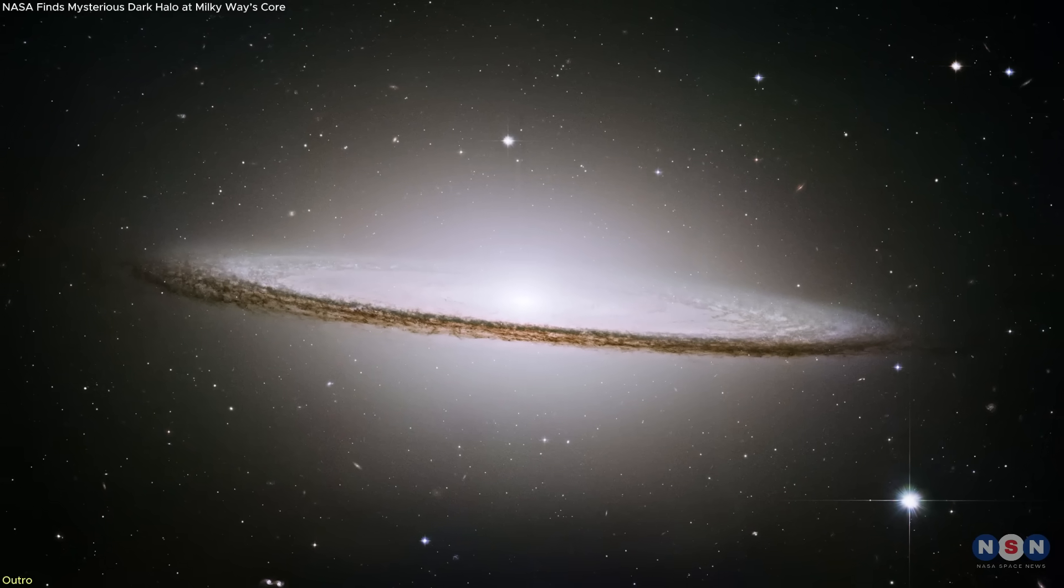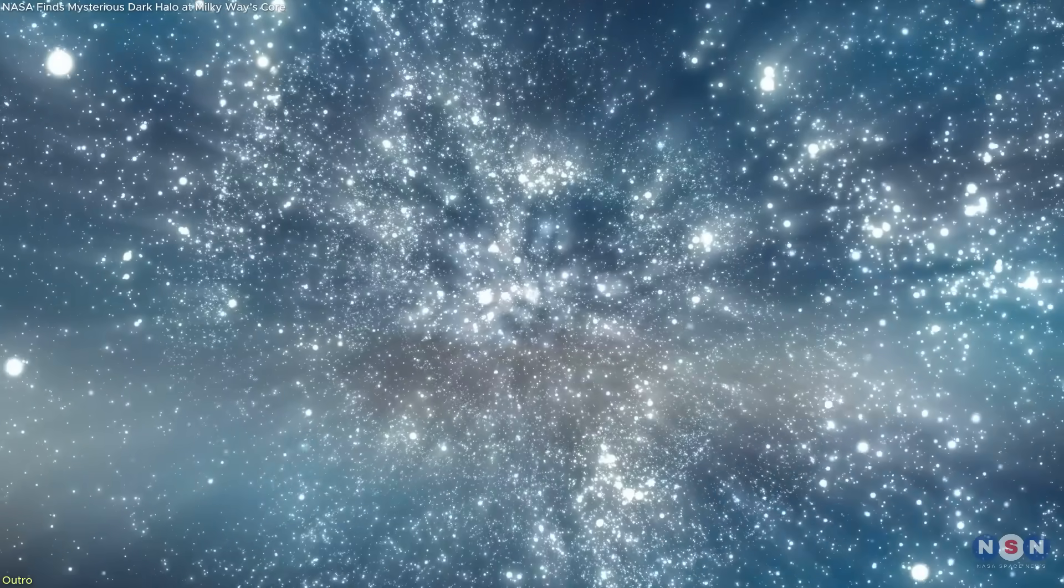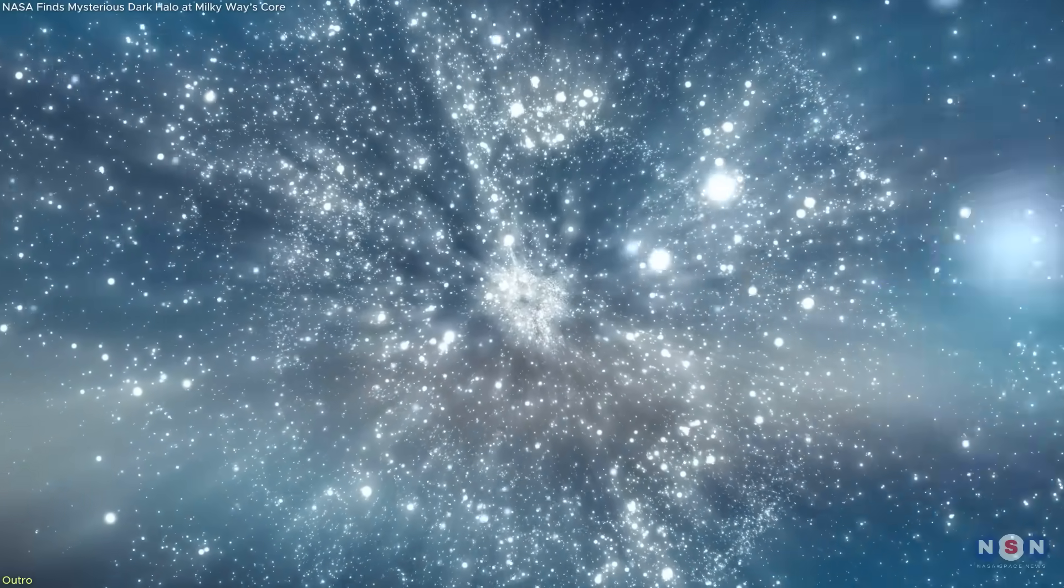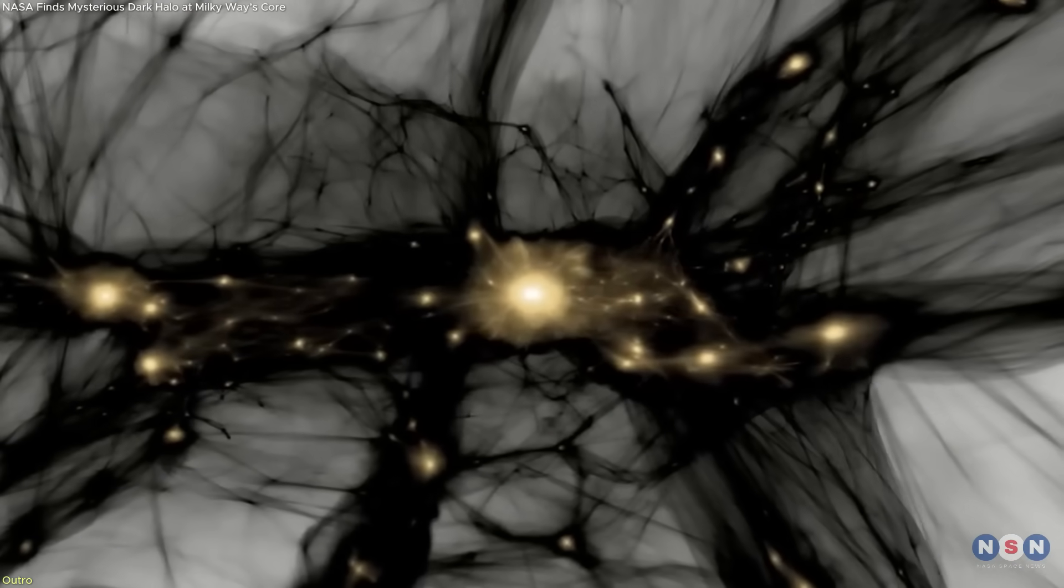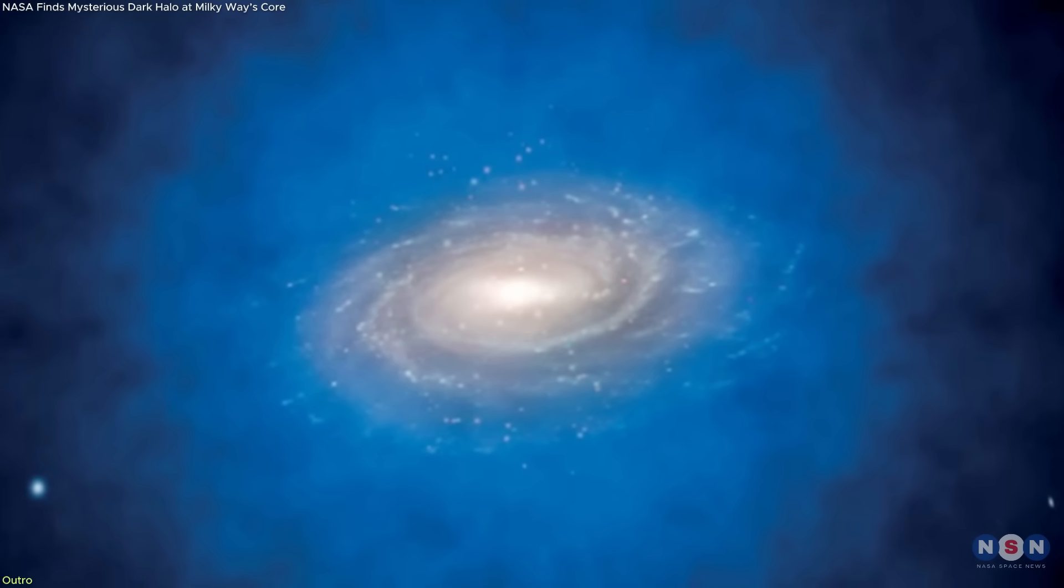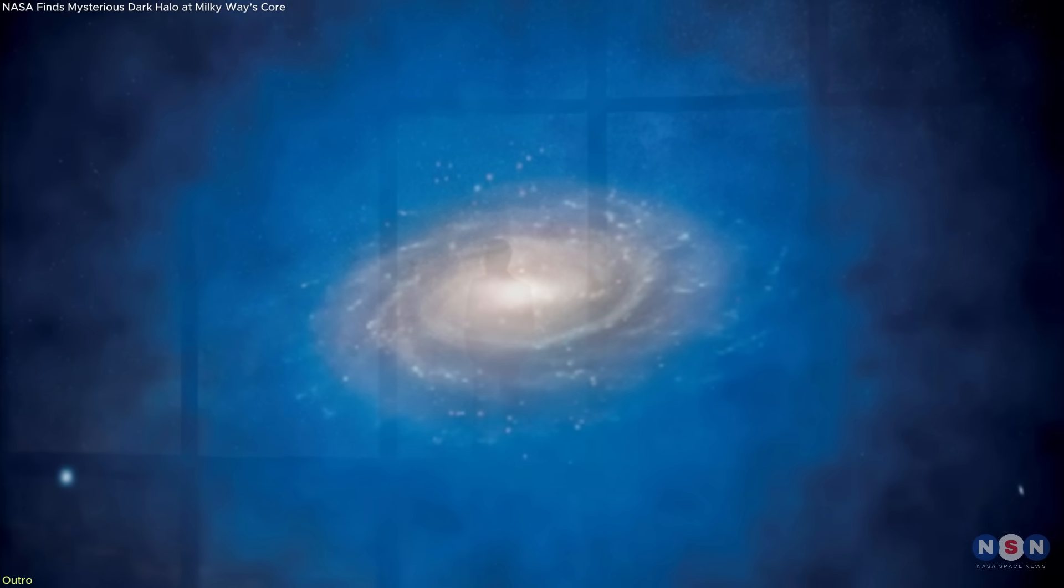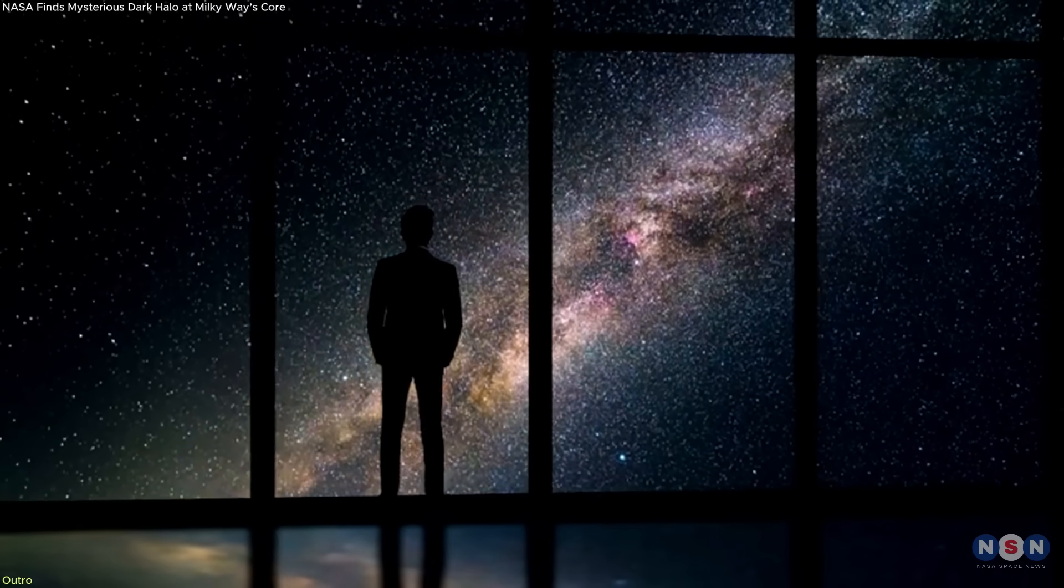The dark halo found at the Milky Way's center may not give us all the answers, but it gives us something just as important: direction, a lead, a set of phenomena we can observe, test, and refine. It reminds us that science doesn't always move through definitive breakthroughs. Sometimes it's the gradual convergence of scattered anomalies that tells us we're on the right path.